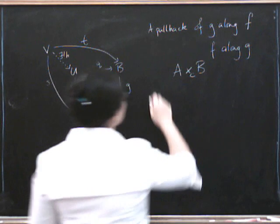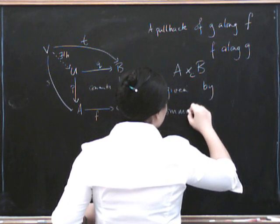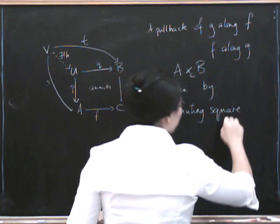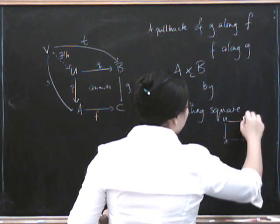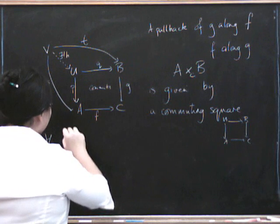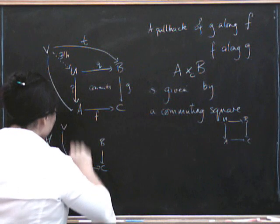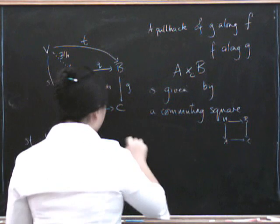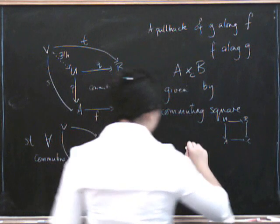Anyway, this pullback is given by a commuting square. So I suppose I should draw it, but I can't really be bothered. But it's the commuting square that's got U up there, and A, B, and C here. And then we have the universal property such that for all other squares, so that's the outside now. Let me just draw this quickly like this. So for all commuting squares like that, commuting, there exists a unique H like that, making the diagram commute.